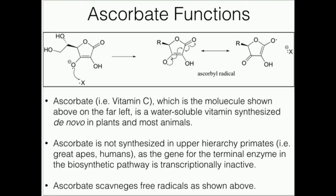However, most animals and plants certainly can synthesize vitamin C de novo — they can make it from scratch. You might notice that vitamin C, unlike some of the other vitamins we've looked at, has a bunch of oxygens and hydroxyl groups. Vitamin C is what we would call a water-soluble vitamin. A, D, E, and K are fat-soluble vitamins, but ascorbate is the first water-soluble one that we're going to look at, and most of the B series vitamins are also water-soluble.